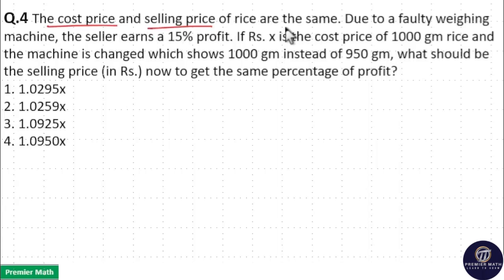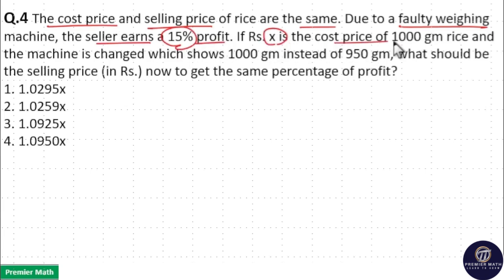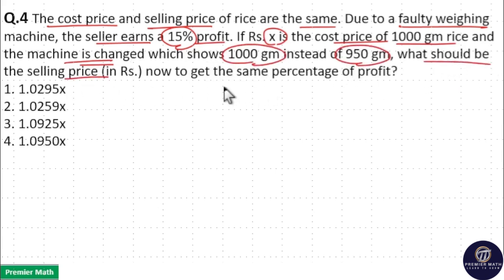The cost price and selling price of the rice are the same. Due to a faulty weighing machine, the seller earns 15% profit. If Rs. X is the cost price of 1000 gram rice and the machine is changed, which shows 1000 gram instead of 950 gram, what should be the selling price now to get the same percentage of profit?